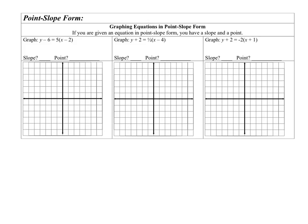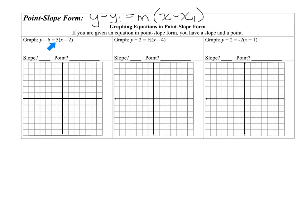Our newest form is point-slope form. That form is y minus y-sub-1 equals m times the quantity x minus x-sub-1. The y-sub-1 is your y value of a point, m is your slope, and x-sub-1 is your x value. When you pull the point out, the opposite of the x-sub-1 value is your x value, and the opposite of the y-sub-1 value is your y value. The slope is always in front of the parentheses.